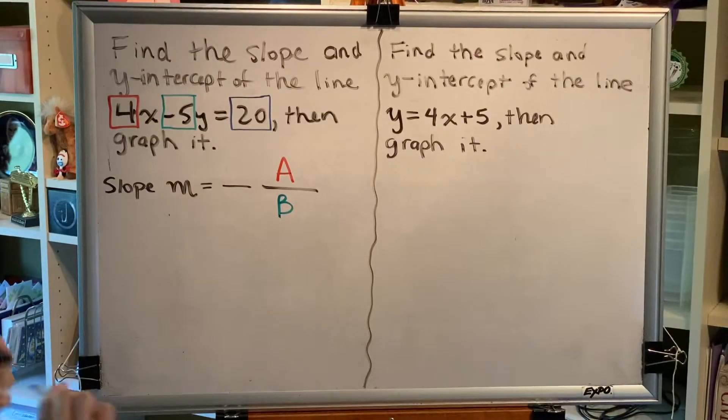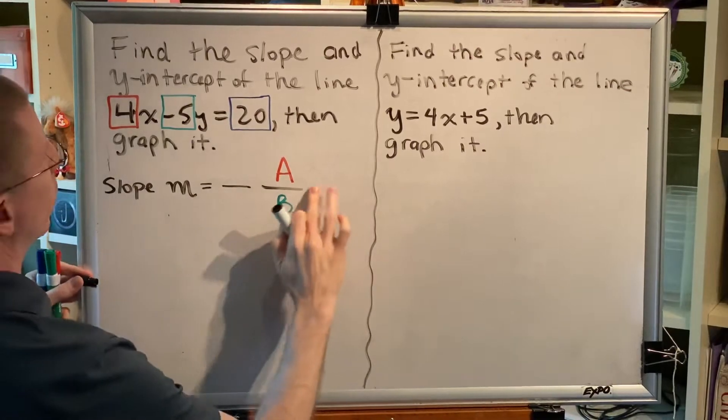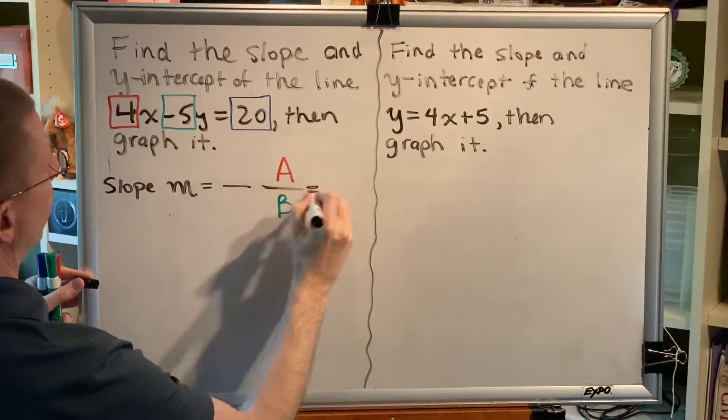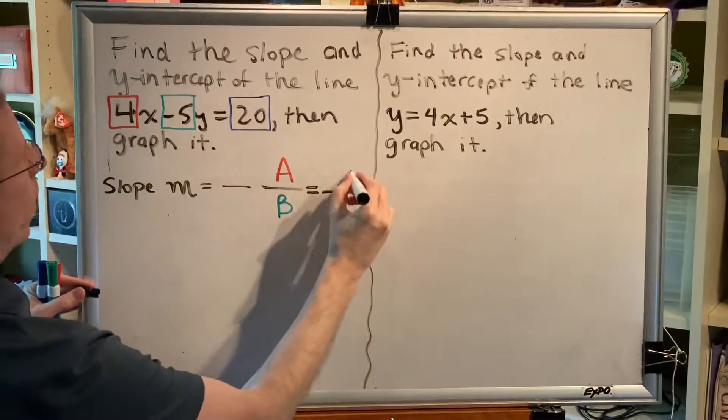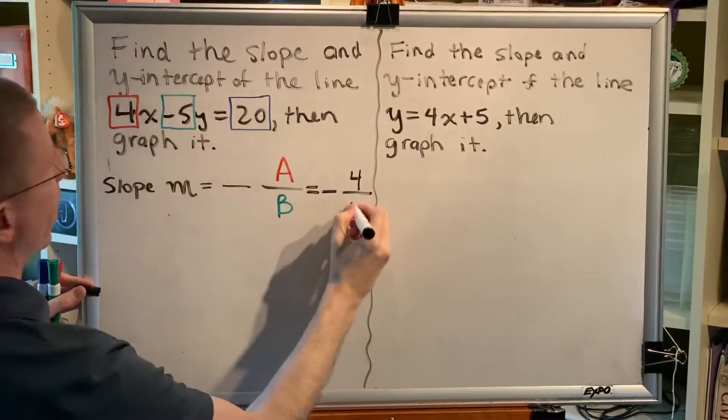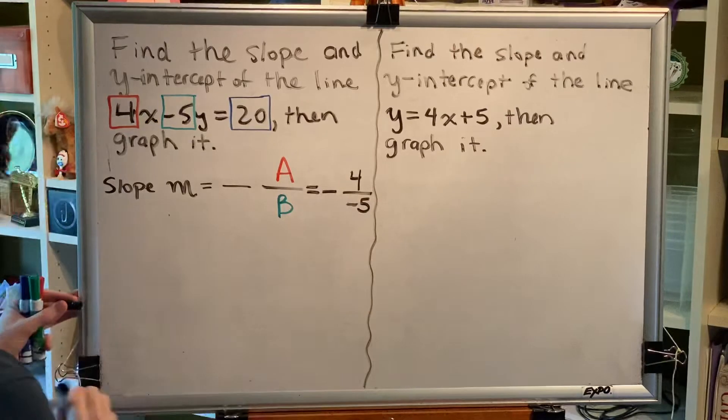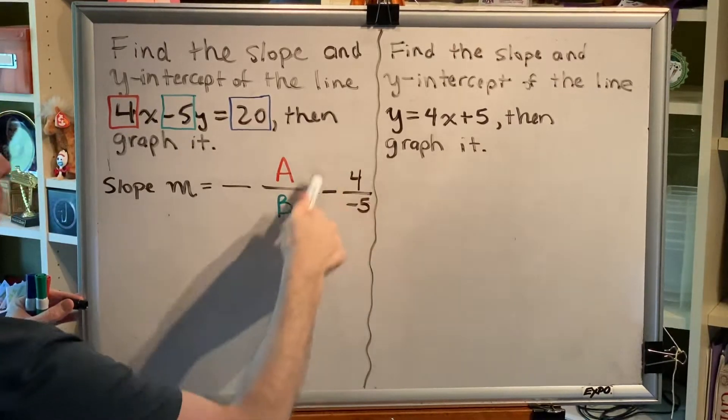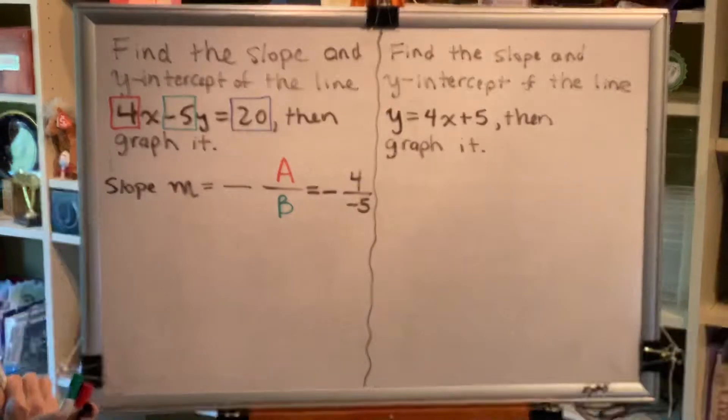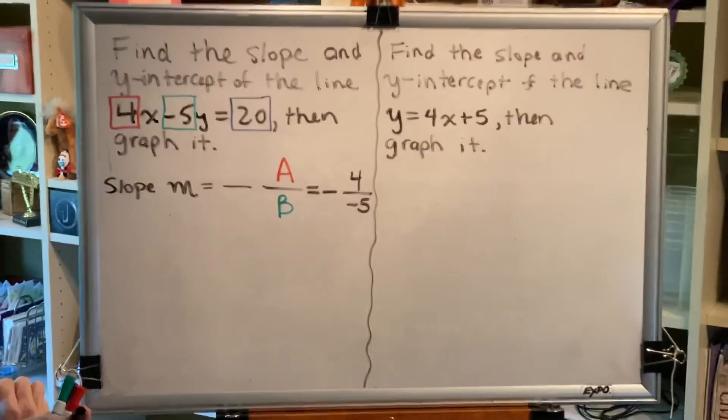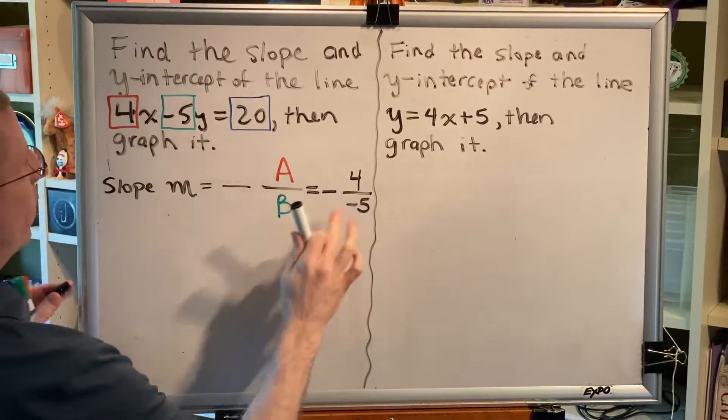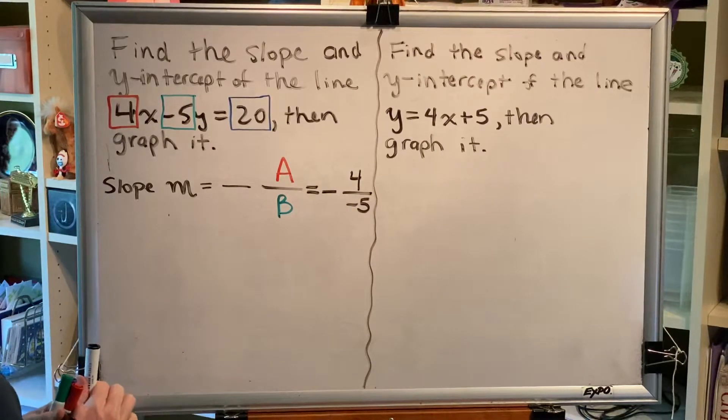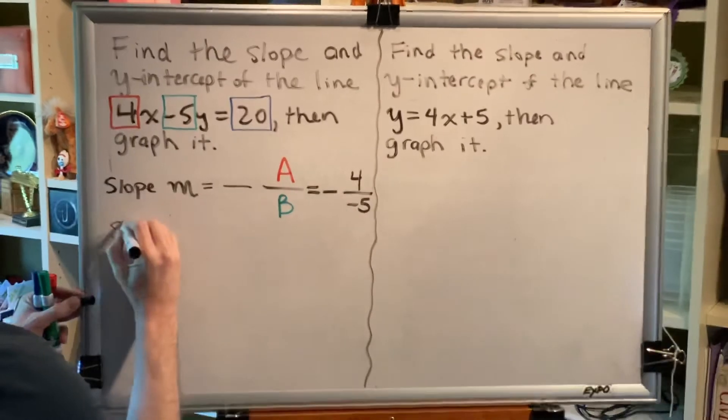So, let's plug in what we know into the formula. Alright, so we have opposite a is 4, b is negative 5. Count up the total number of negatives. If it's even, the result will be positive. If it's odd, the result will be negative. We have an even number of negatives, which makes a positive. The slope is 4 fifths.